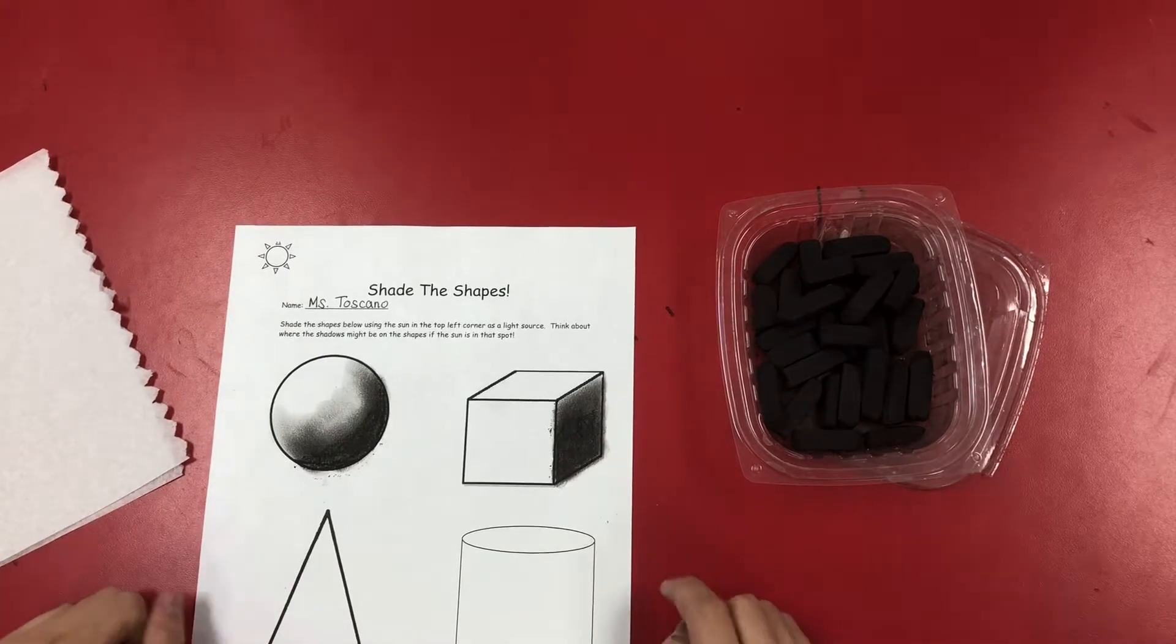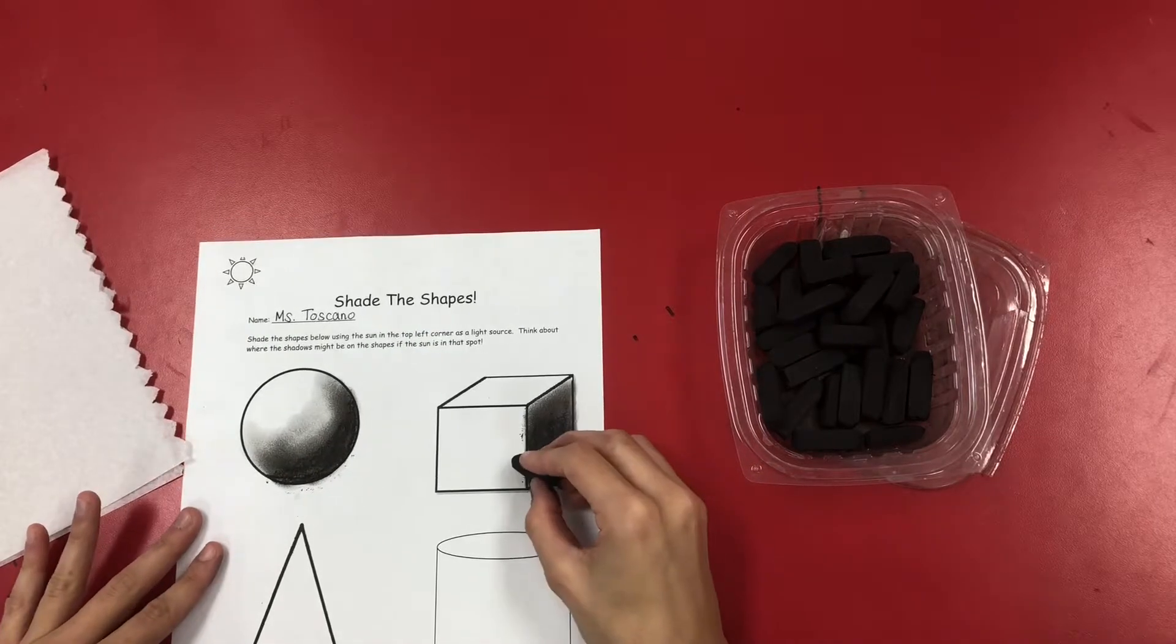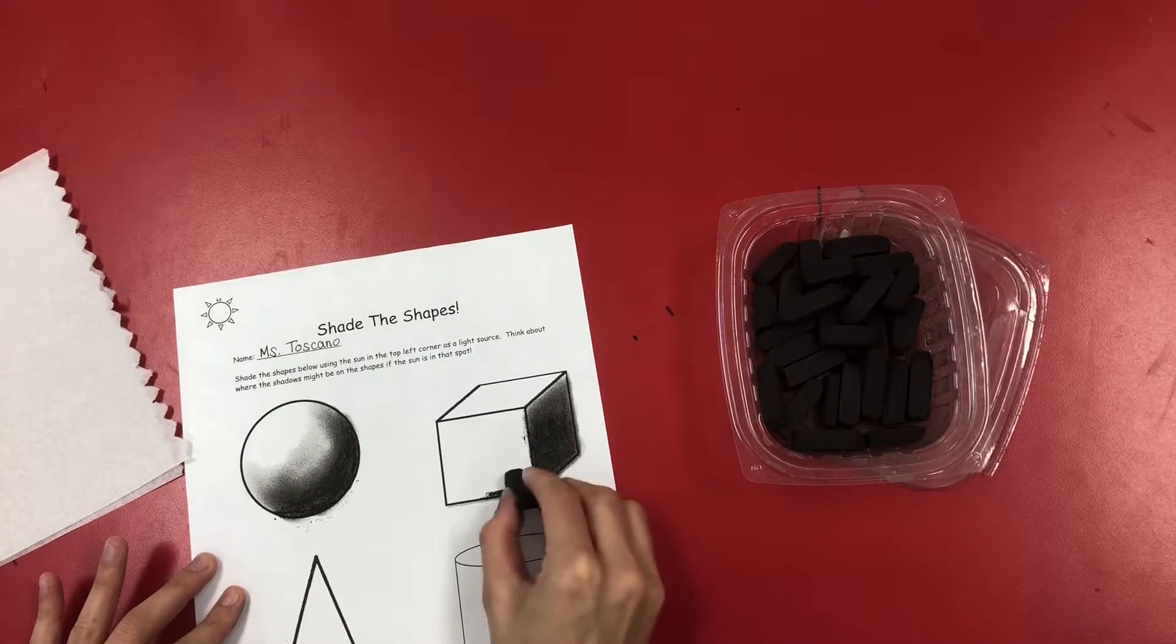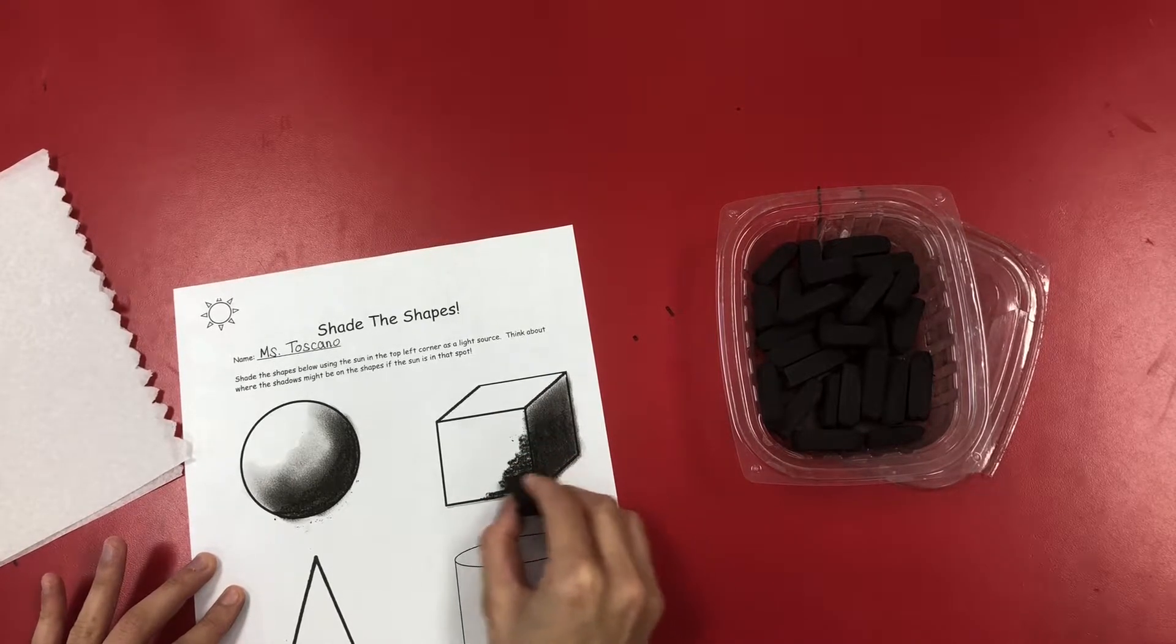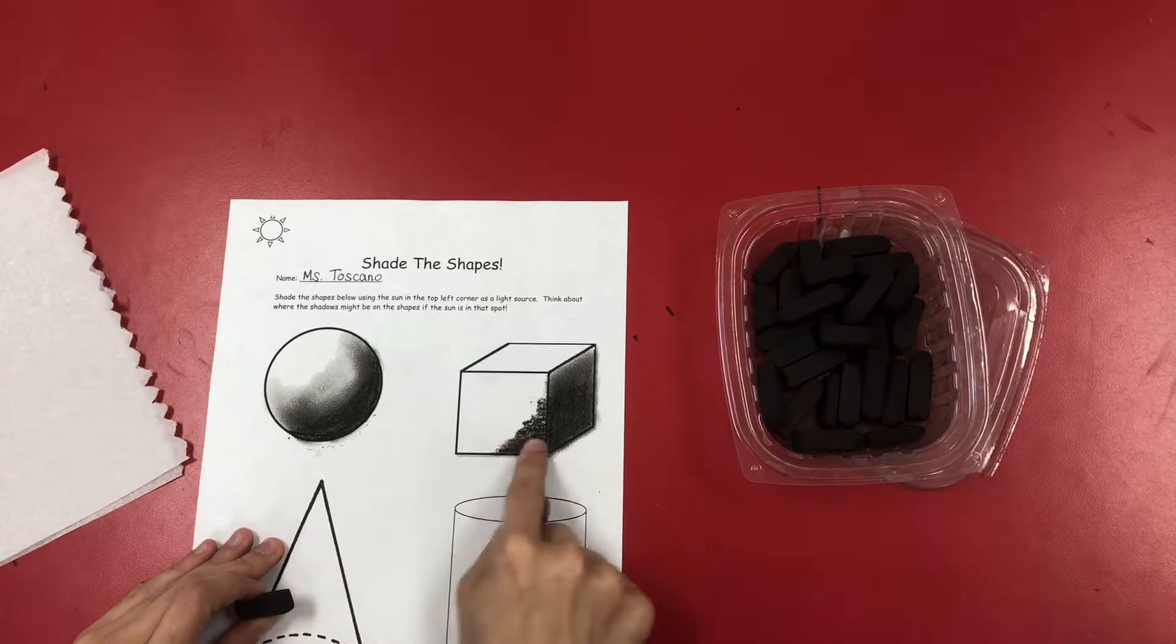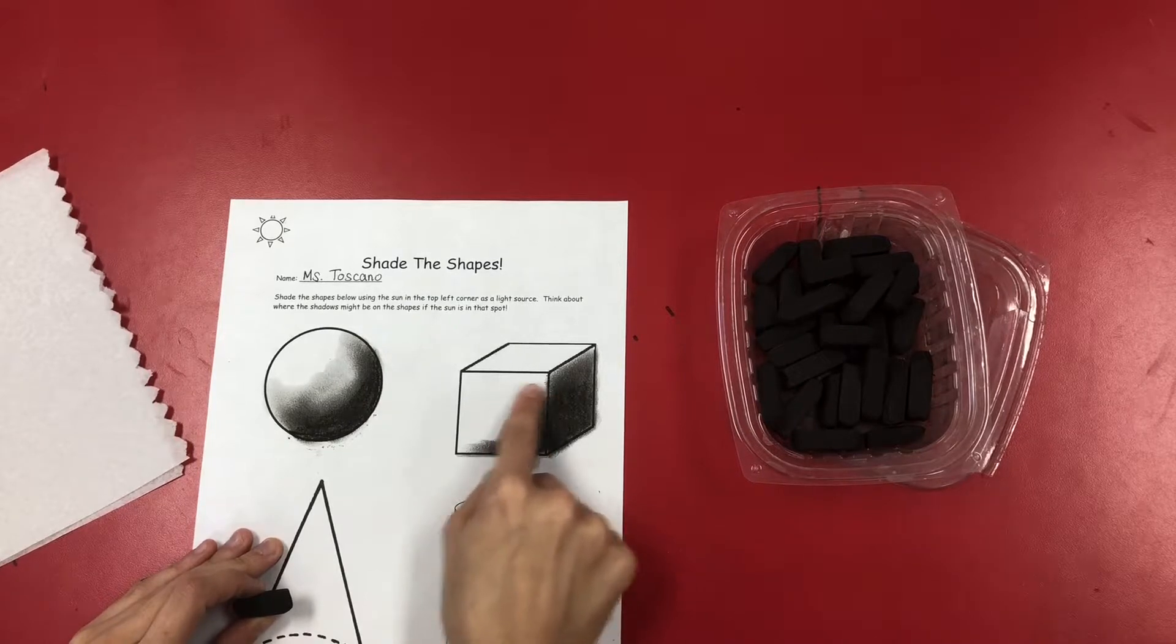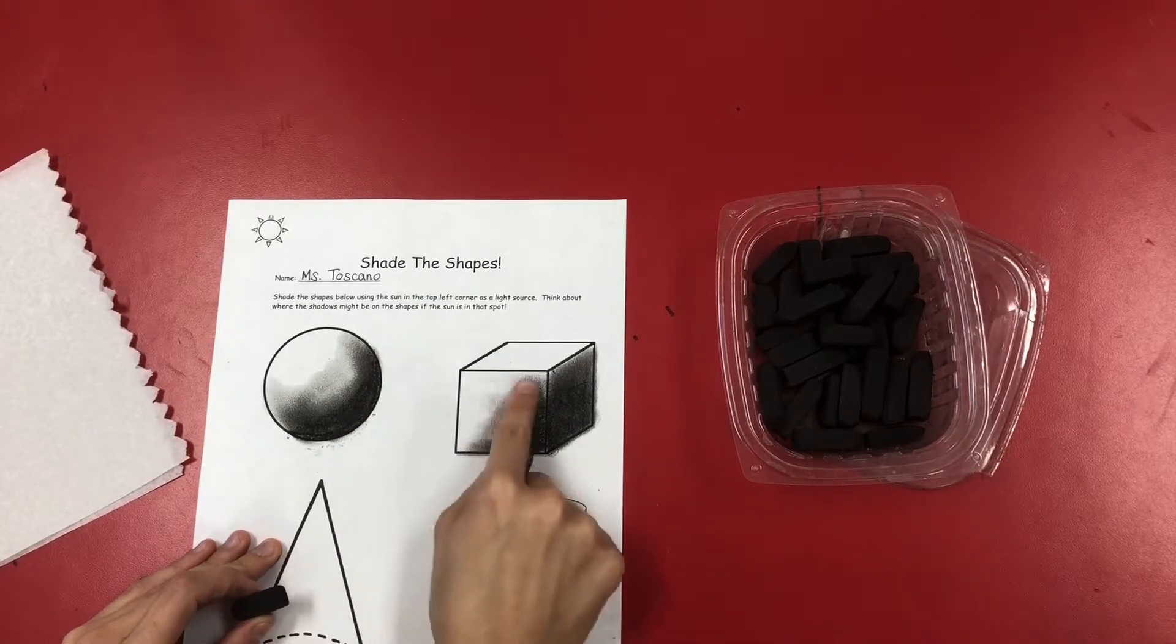This back side is probably going to be the darkest, and I'm going to take a little bit of the charcoal and color in this right side just a smidge of that front-facing edge of the cube. I'm going to take my finger and blend it just a little bit, and we're starting to make it look a little three-dimensional.